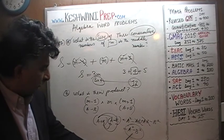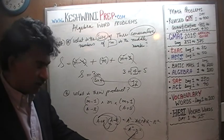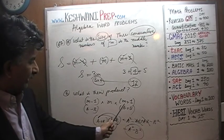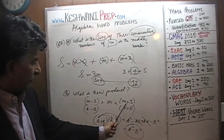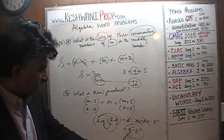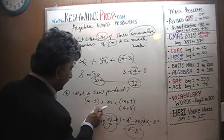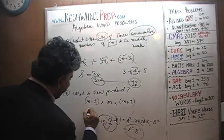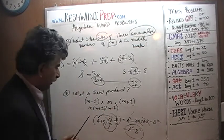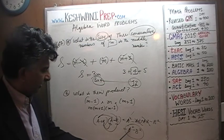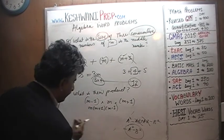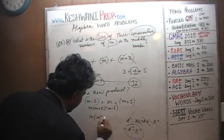So m minus 1 times m plus 1 is simply m squared minus 1 squared. We write the full product as m times (m plus 1) times (m minus 1), then recognize that (m plus 1)(m minus 1) is m squared minus 1. So the final answer is m times (m squared minus 1).